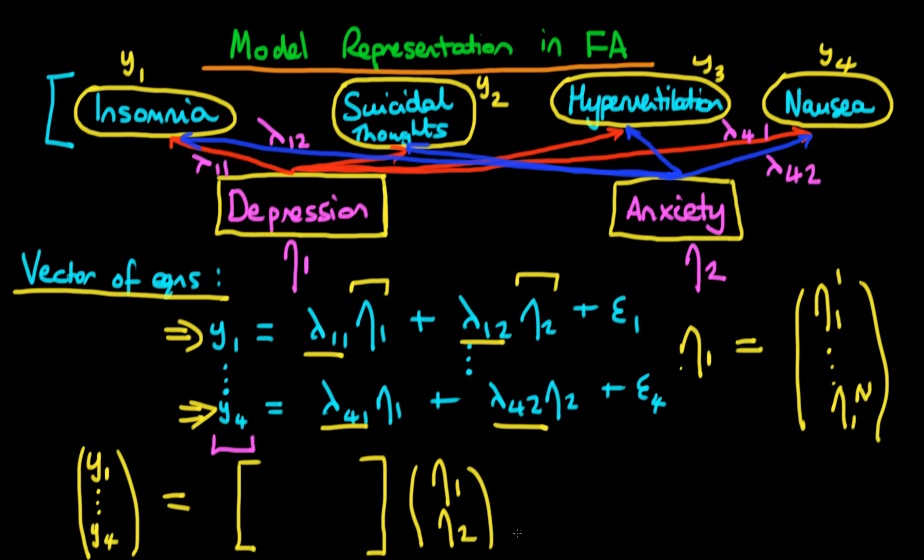Plus our vector of our unique disturbance term. So that's epsilon 1 through epsilon 4. And then just actually trying to replicate what we have here in equation form, we can formulate our matrix which we haven't filled in yet. It's just going to have the specific values of the weights on the unobserved characteristics. So that's lambda 1 1 and then lambda 1 2 as its first row and then as the final row we would have lambda 4 1 and lambda 4 2.